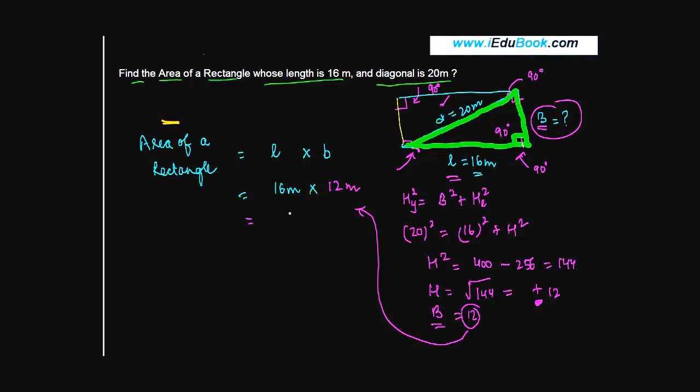16 into 12 gives you 160 plus 32, which is 192 meter square. So the area of the rectangle whose length is 16 meters and the diagonal is 20 meters is equal to 192 meter square.